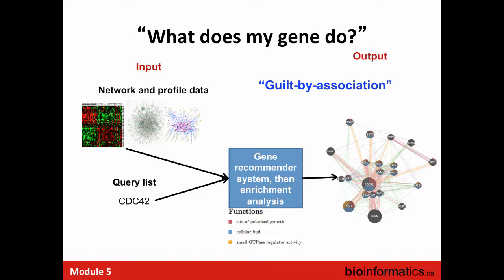To answer 'what does my gene do,' the input is all the networks you're interested in plus the query gene, which you plug into a gene recommender system — kind of like Amazon: you read this book, here are other books you might like. The output is the gene and the 20 genes it's most highly linked to. In the GeneMANIA interface, genes can be colored based on their assigned GO function, and you can see that many genes linked to CDC42 share similar functions.